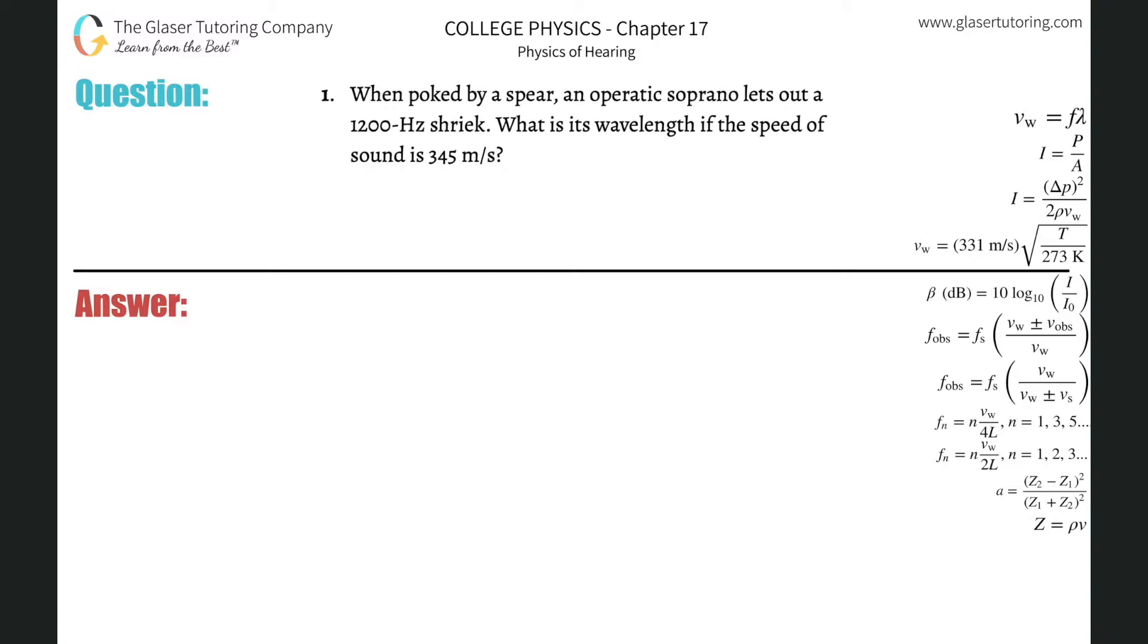Number one, when poked by a spear, an operatic soprano lets out a 1200 hertz shriek. What is its wavelength if the speed of sound is 345 meters per second?